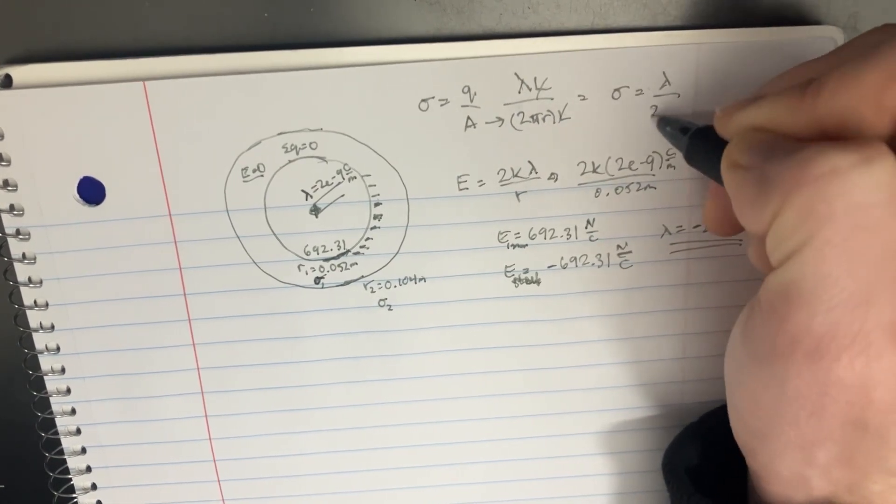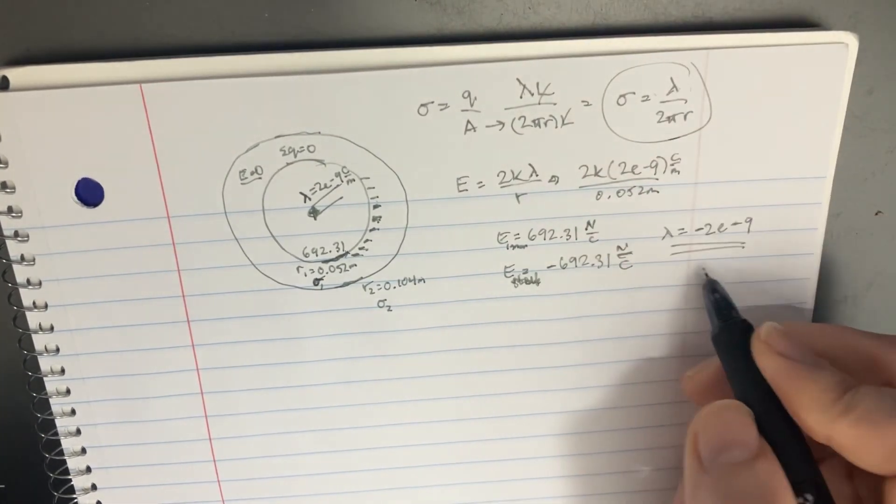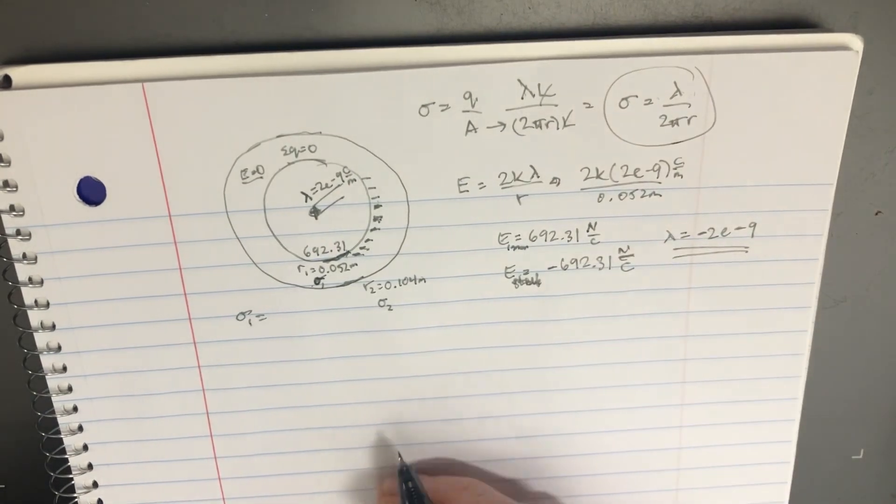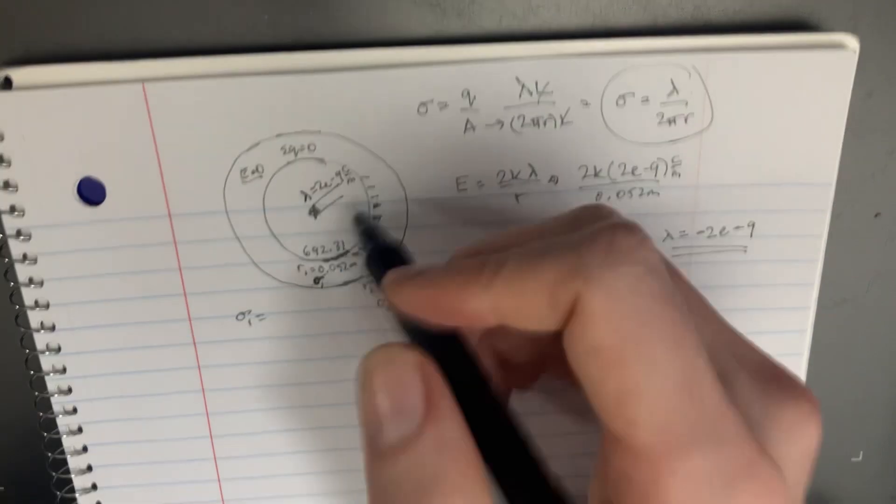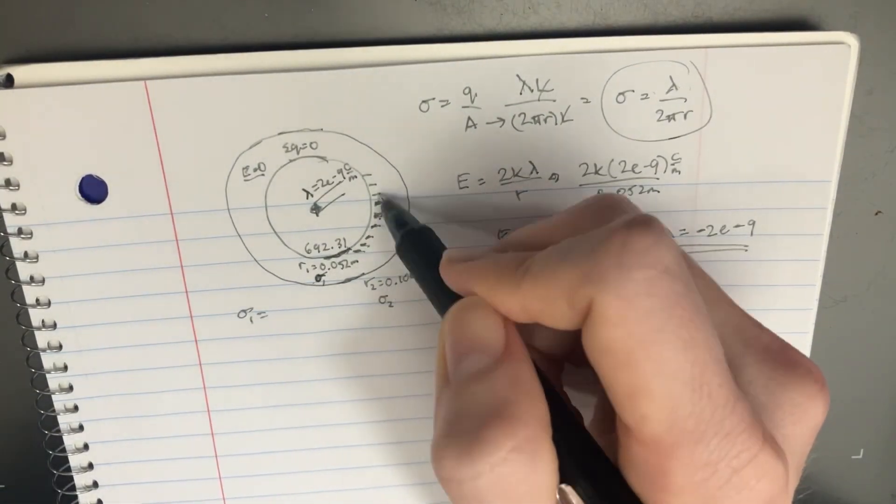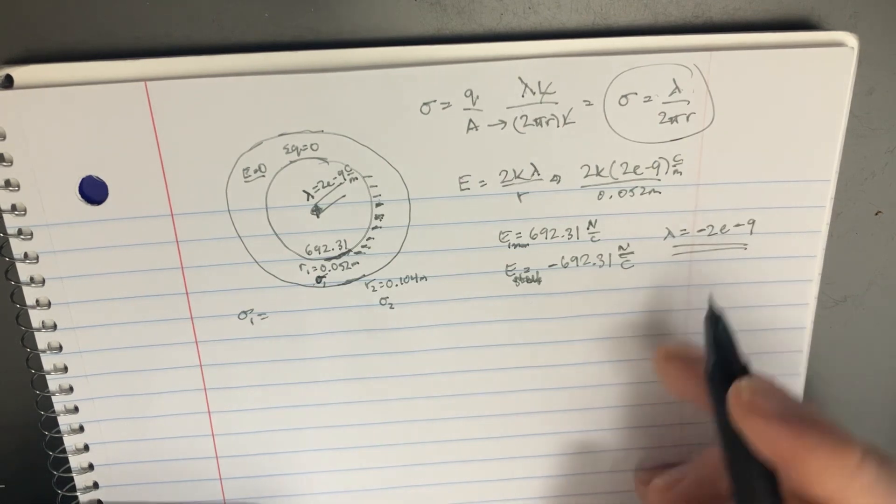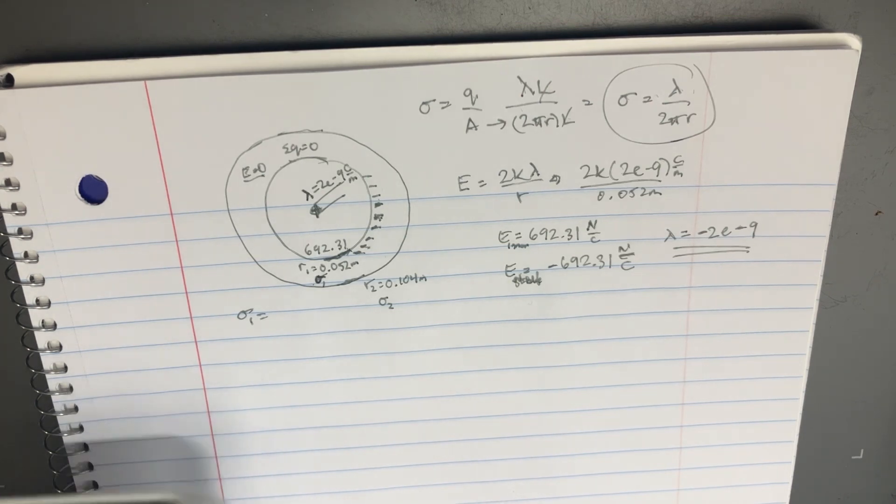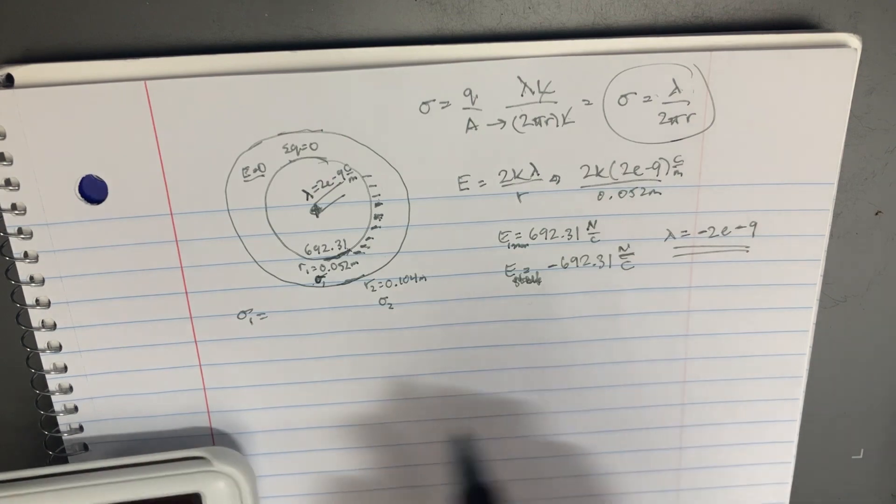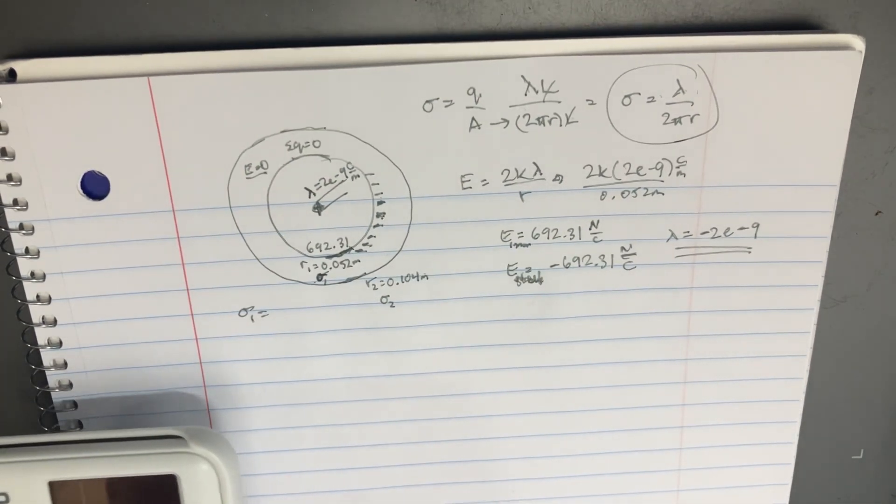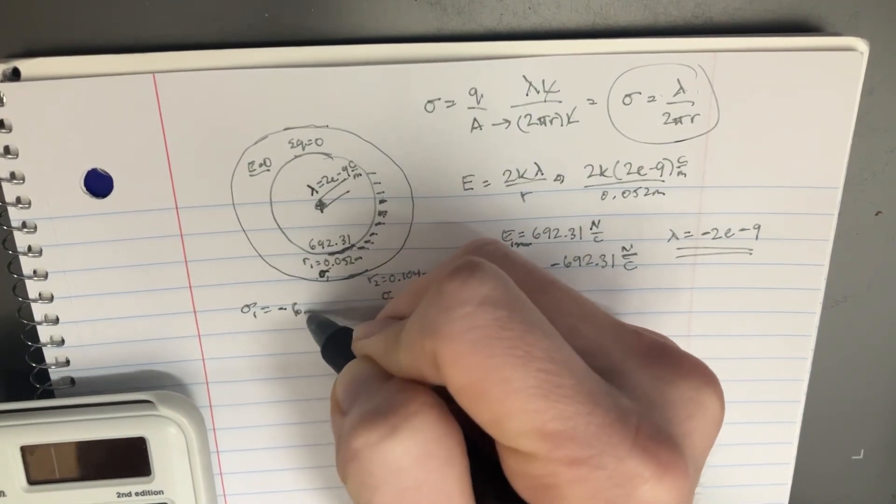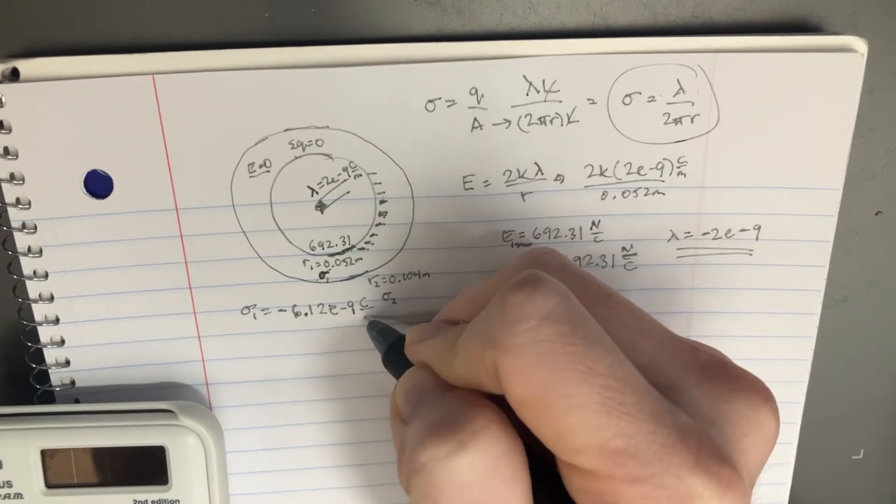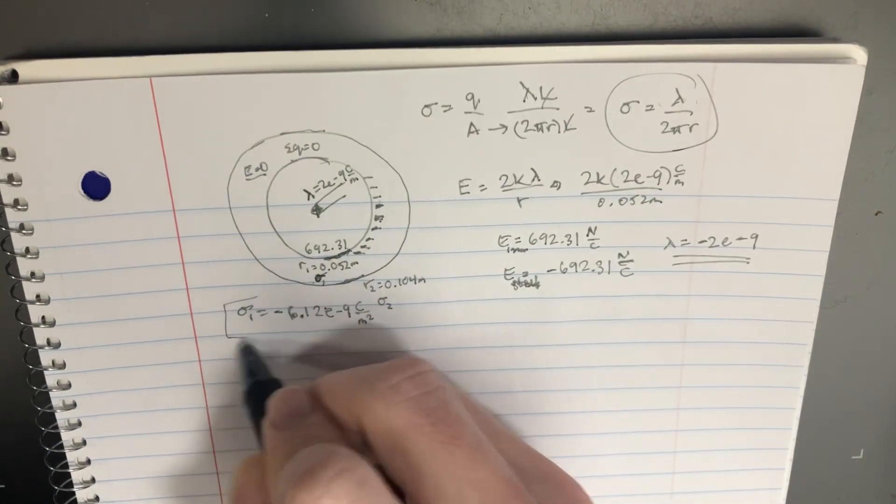So that sigma 1 is going to be, the magnitude here of the surface density is going to be negative. So let's keep that in mind. Negative 2E to negative 9. And then we're going to go 2 pi. And the radius is 0.052. Okay. So here the surface charge density is 6.12 times E to the negative 9. And this is going to be coulombs over meters squared. So that's nice. We got this thing for the inside portion of this shell.